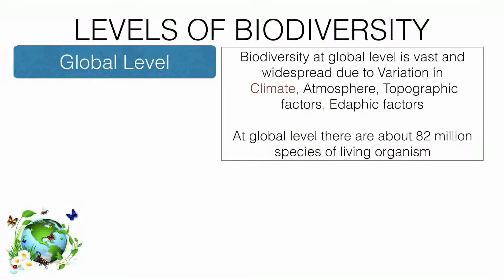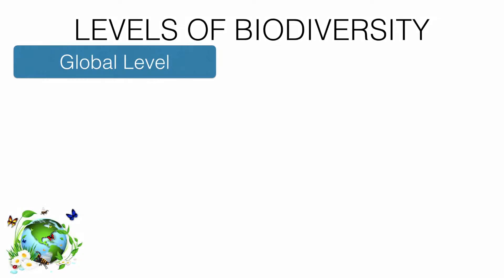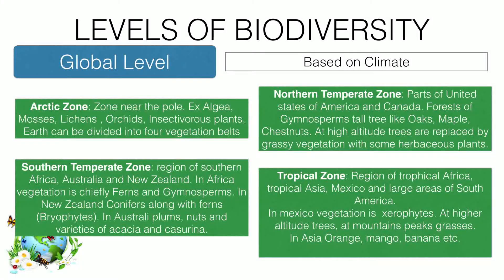At the global level, there are about 82 million species of living organisms. Based on climate, they are divided into four different zones: Arctic zones, southern temperate zones, northern temperate zones, and tropical zones.